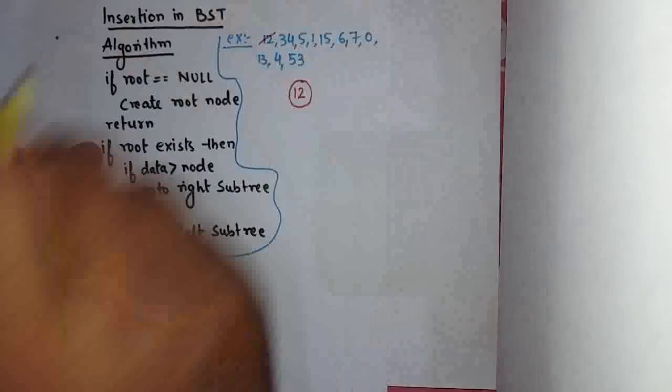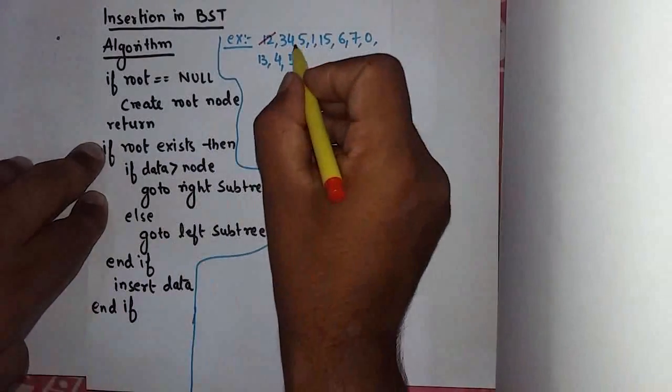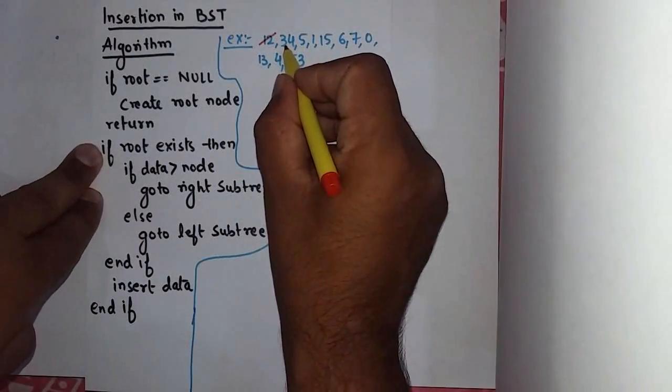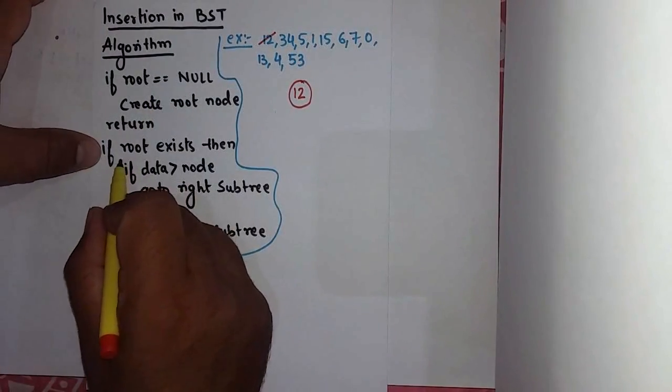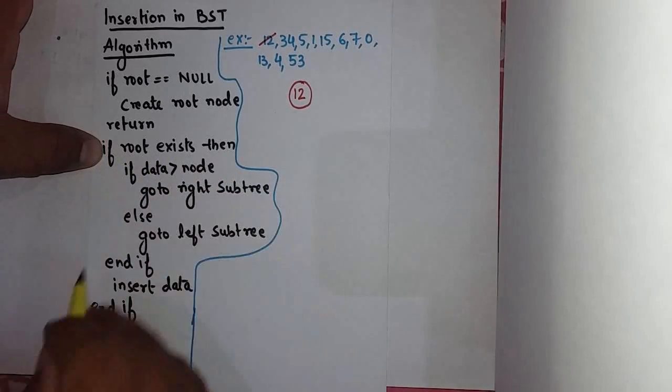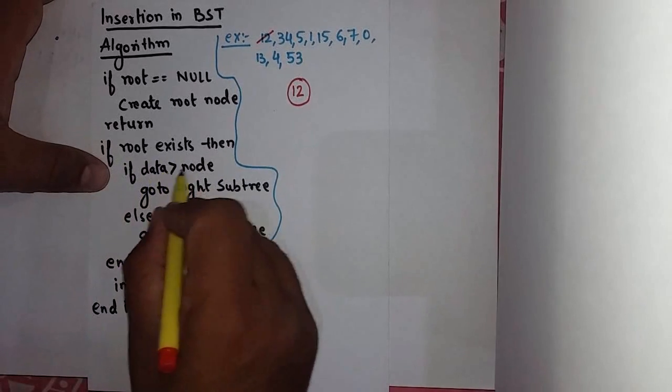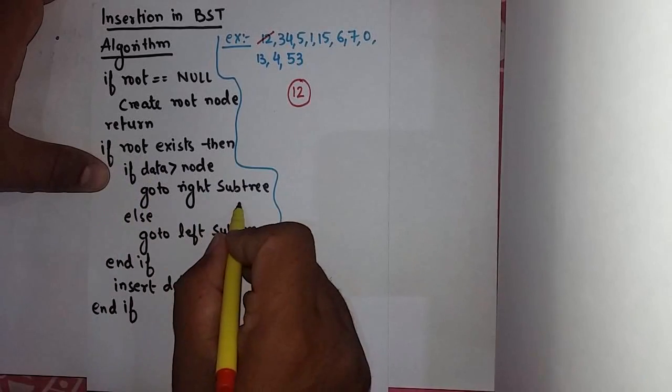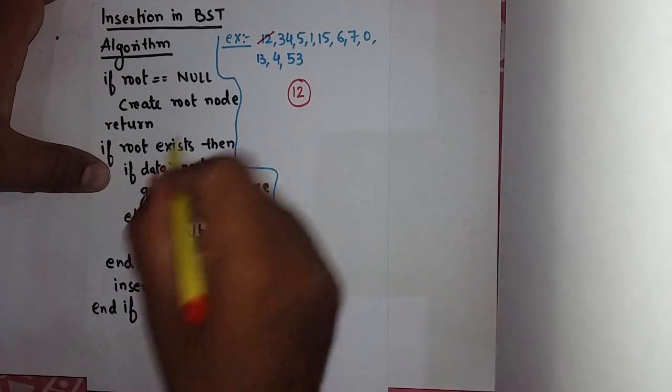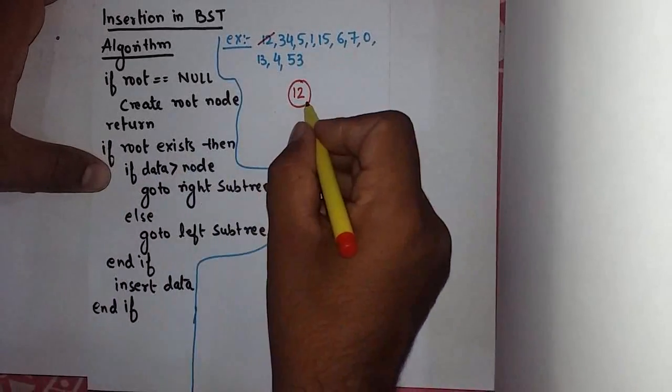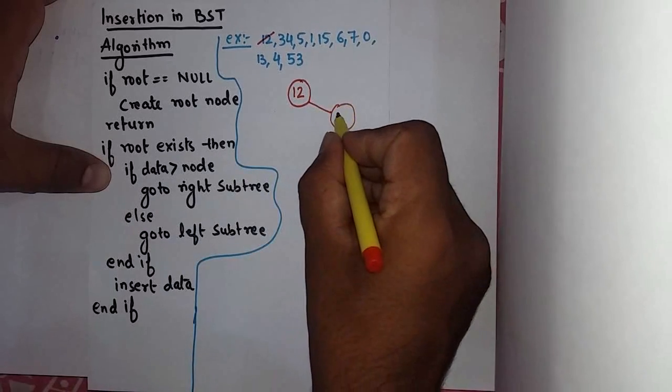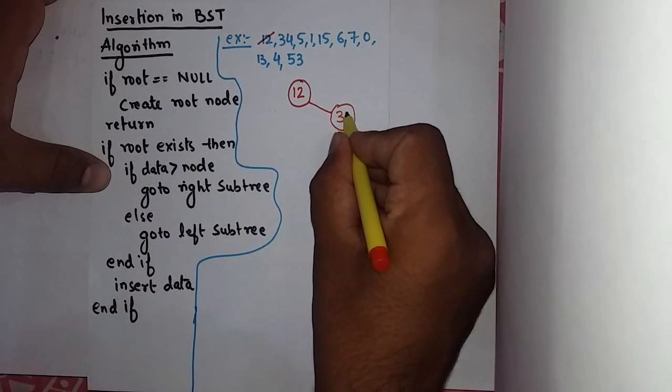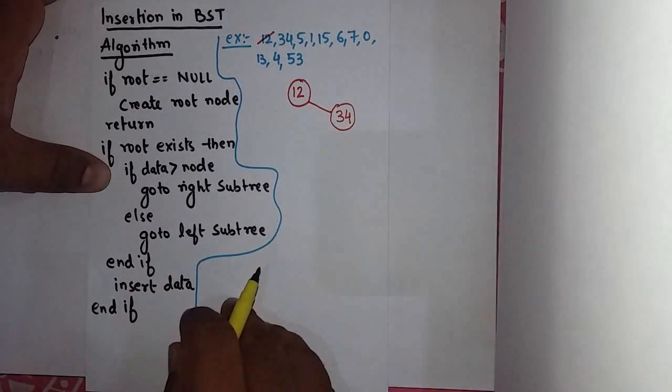12 is done. Now second element came is 34. Now I will come here. It says if root exists, then if data is greater than node, go to right subtree. Now data I have is 34, which is greater than 12, so I will go to right subtree and create this as 34.